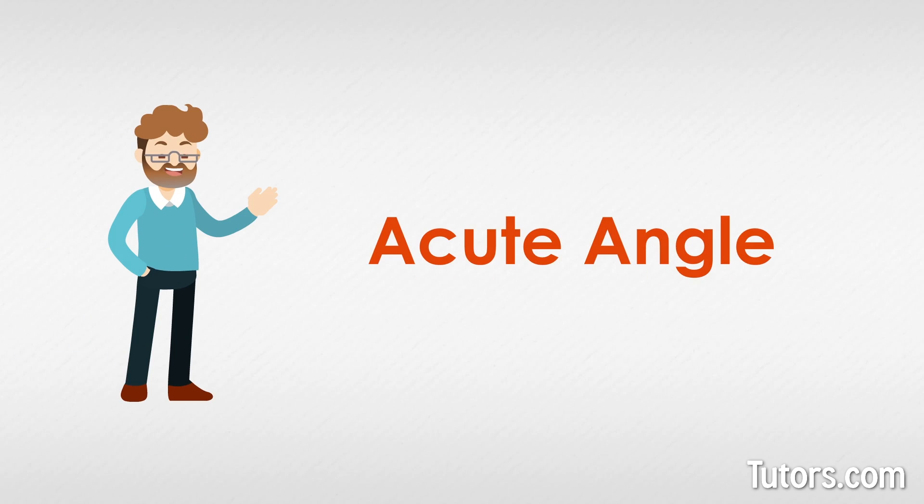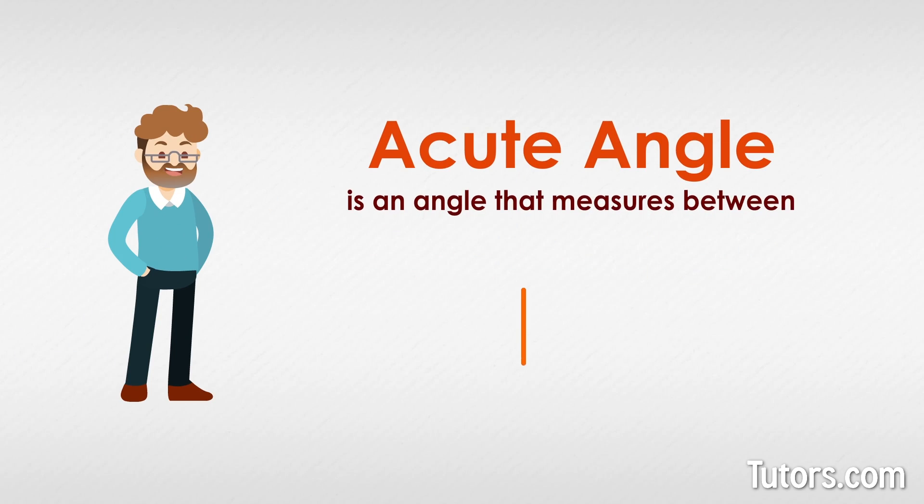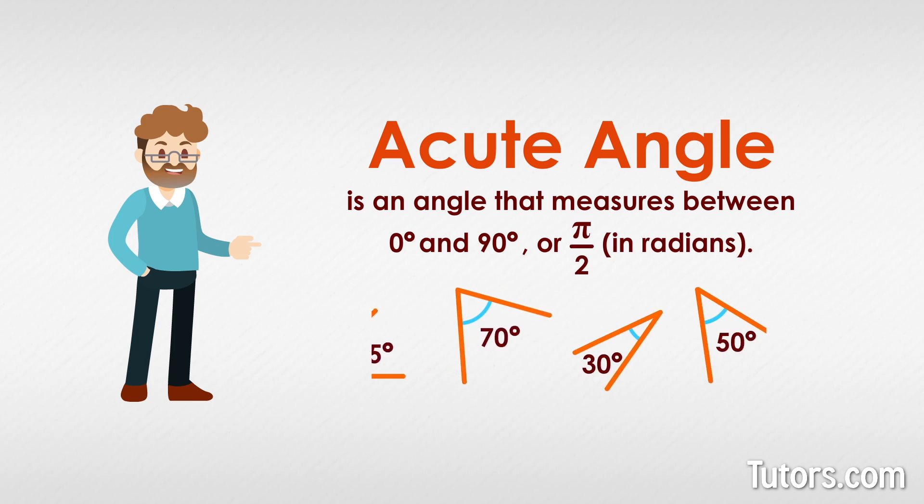What is an acute angle? An acute angle is an angle that measures between 0 degrees and 90 degrees, or pi divided by 2 in radians. Acute angles are one of several angles you will encounter in geometry, and they are always less than 90 degrees.